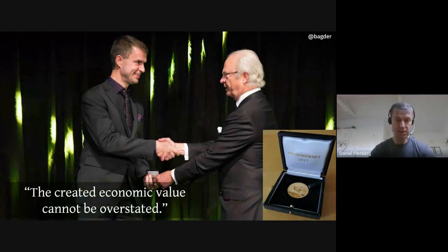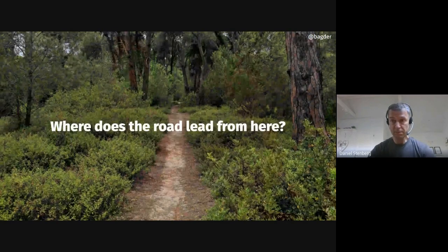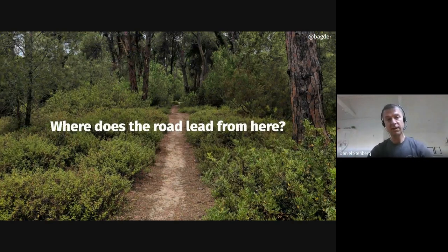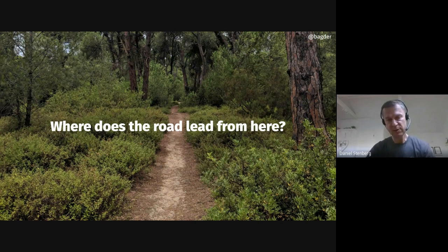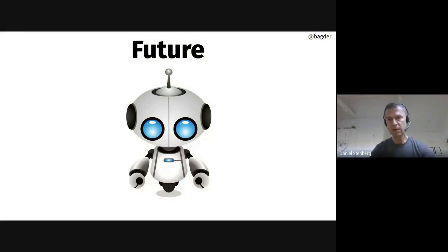This actually made me get the Polhem Prize award in 2017 — I got this gold medal from the hands of the Swedish king. That was fun and quite an honor. One of the challenges when running an open source project like curl is figuring out where to go from here — which features and ideas should we merge? Looking forward is really hard. It's very easy to look back and see where we made mistakes, but it's hard to know where to go, and looking back it's easy to get the impression that we actually knew what we were doing, but it's hard to predict.